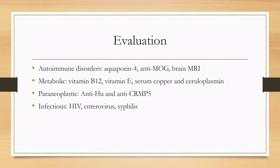In terms of evaluation, you'll want to work up secondary causes. Depending on the history, you may order different things such as aquaporin-4 or anti-MOG antibodies, or a brain MRI to look for autoimmune diseases such as multiple sclerosis, neuromyelitis optica, or anti-MOG disease. You'll also send metabolic labs — for example, B12, vitamin E, and serum copper deficiencies can cause a similar picture.